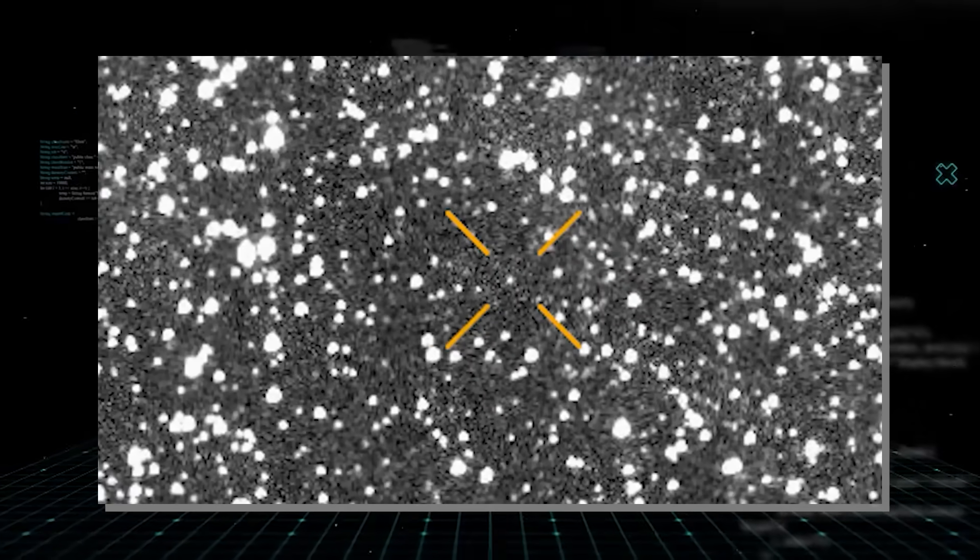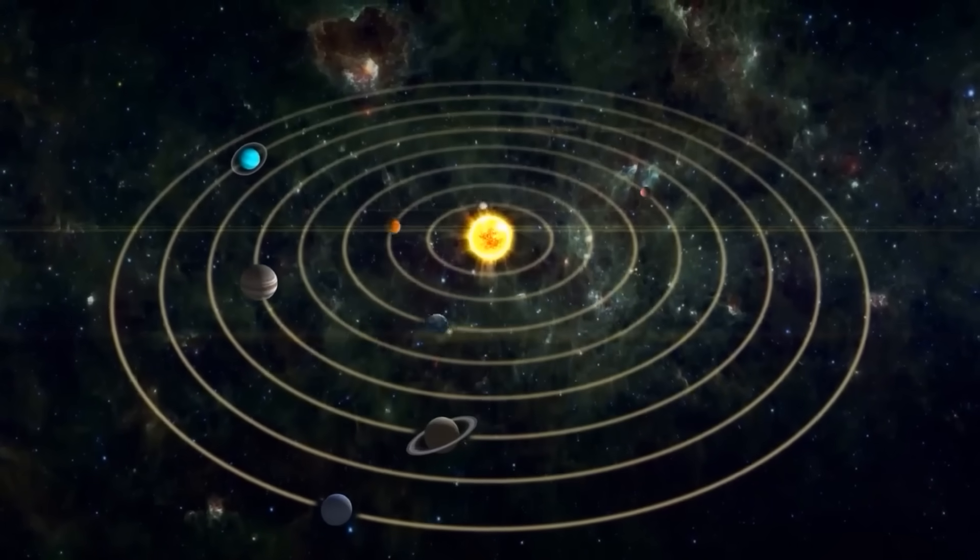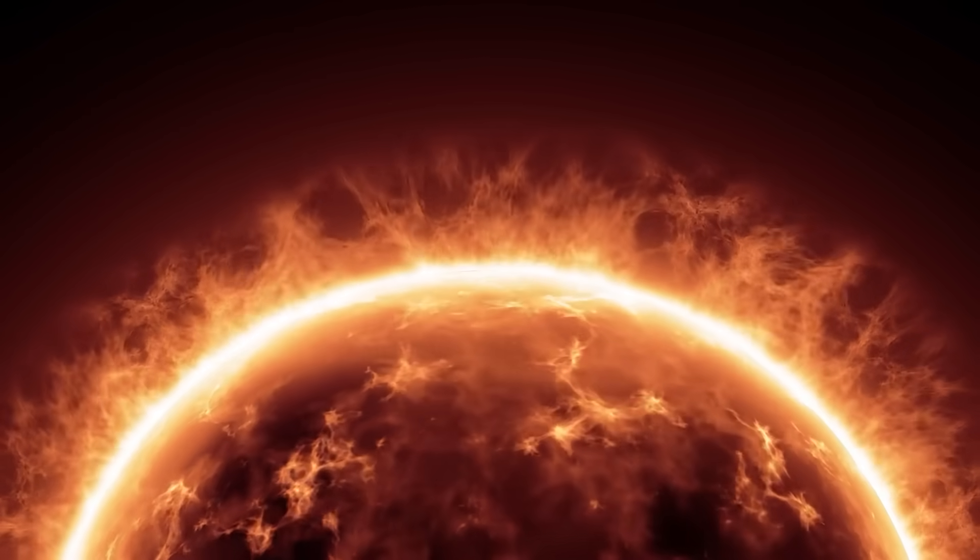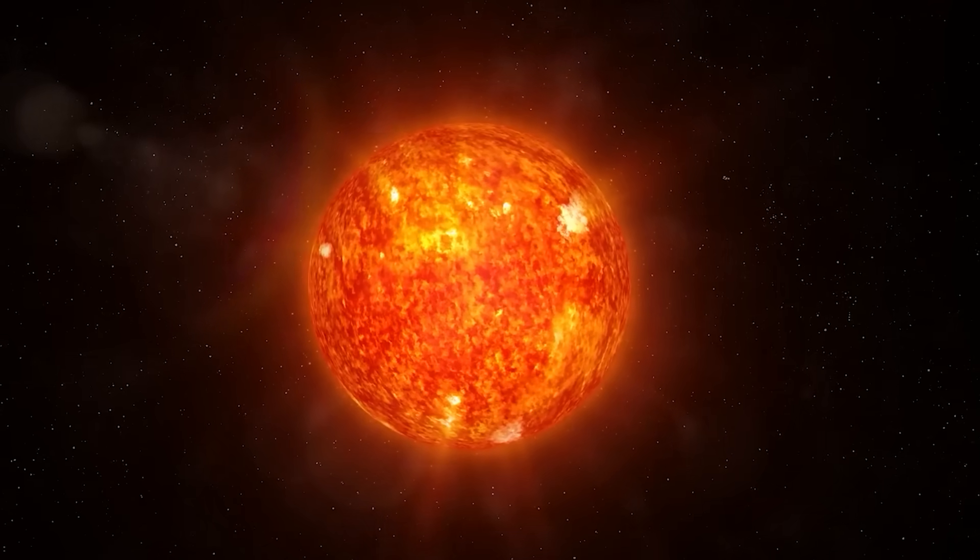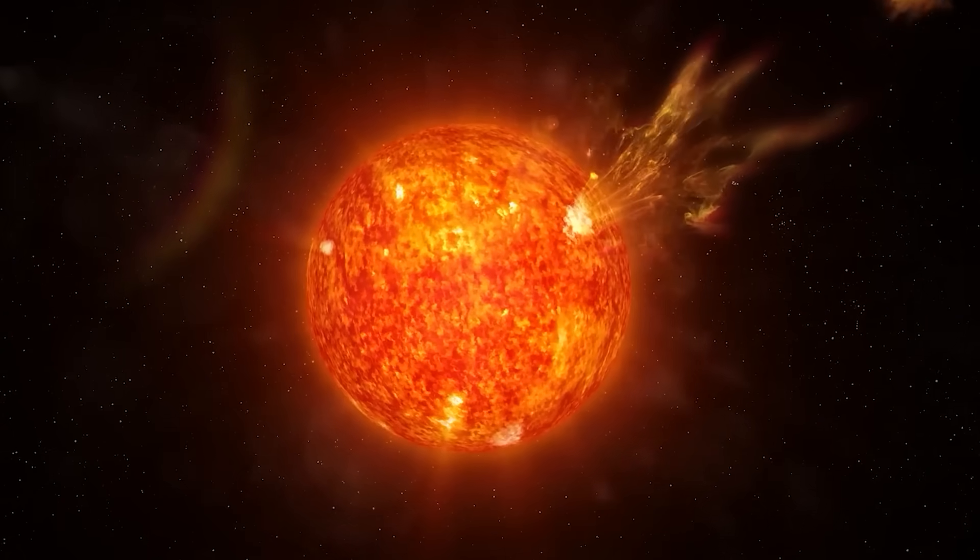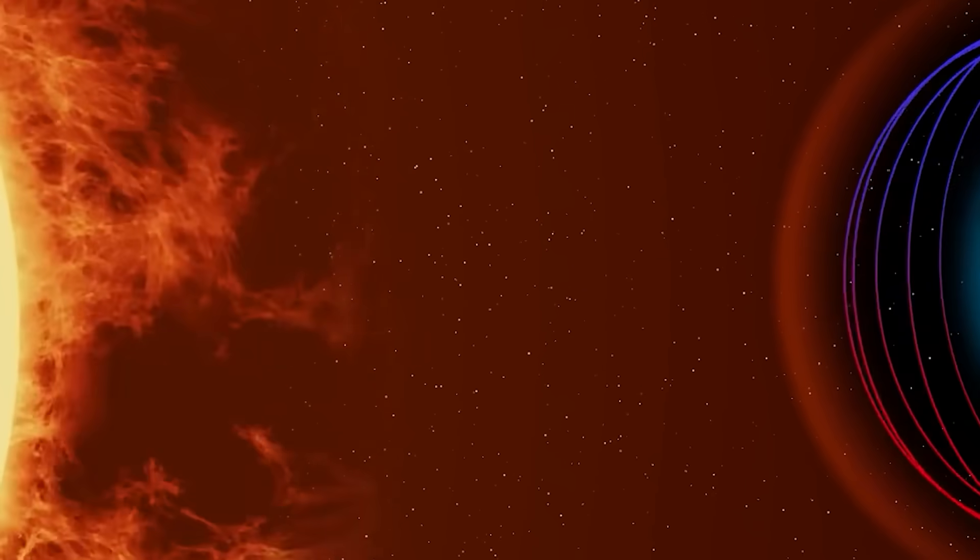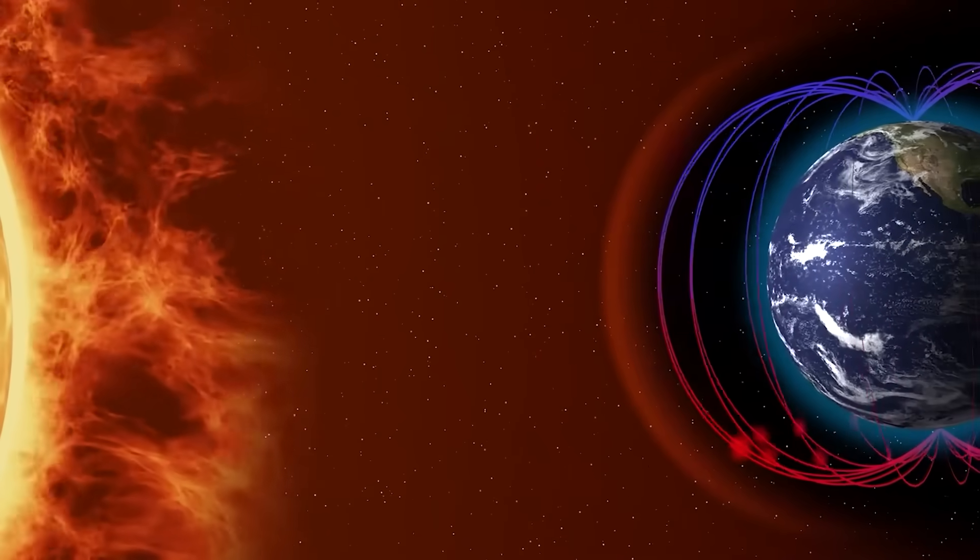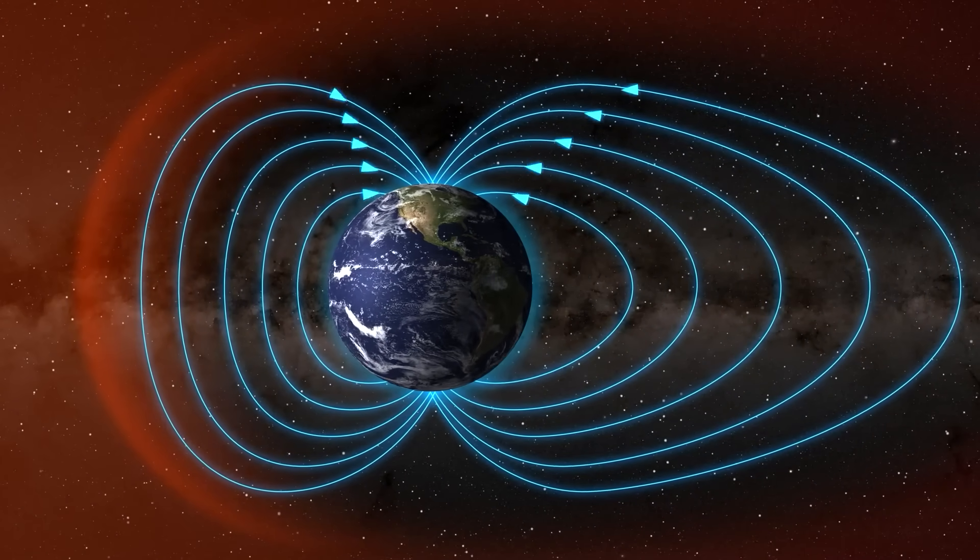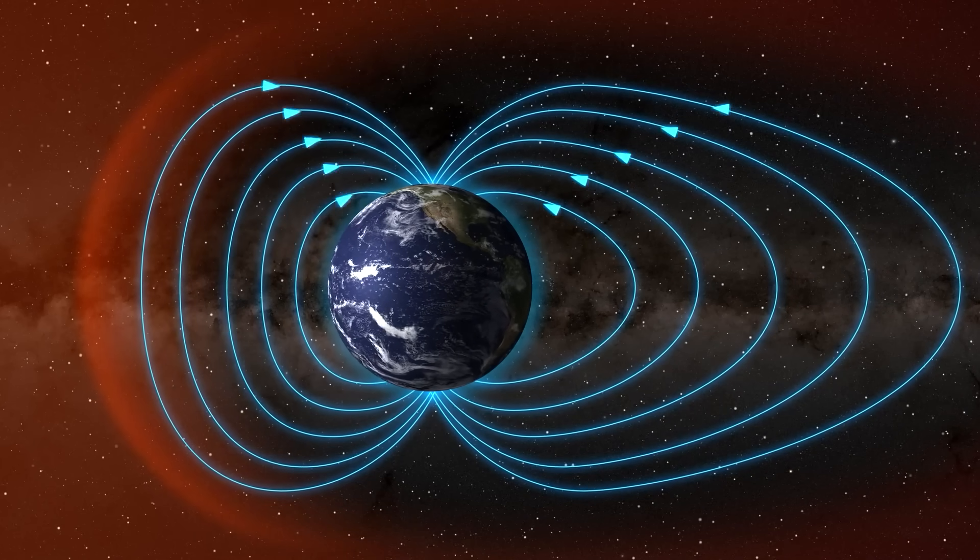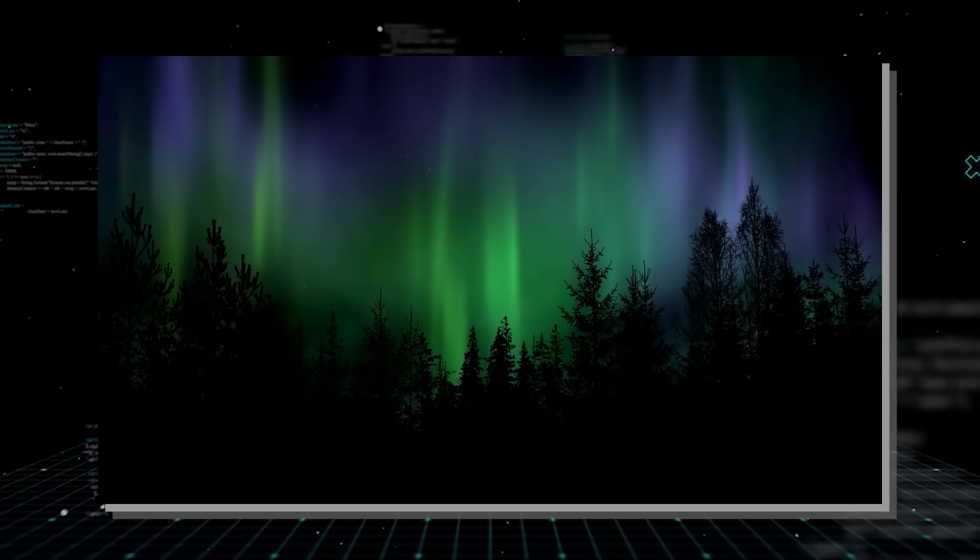To truly grasp why the actions of Comet 3I Atlas are so mind-bending, you first have to understand the rules of the game. Our solar system is dominated by the sun, not just by its gravity, but by its energy. The sun constantly spews out a stream of charged particles, protons and electrons, called the solar wind. Imagine a relentless, invisible hurricane blowing outwards from the sun in all directions, traveling at speeds between 1 and 2 million miles per hour. This wind is so powerful that if Earth didn't have its magnetic field, it would strip away our atmosphere and boil our oceans. Our magnetosphere acts like a shield, creating a teardrop-shaped bubble called the heliosphere. The visible result of this cosmic battle is the aurora borealis and australis.